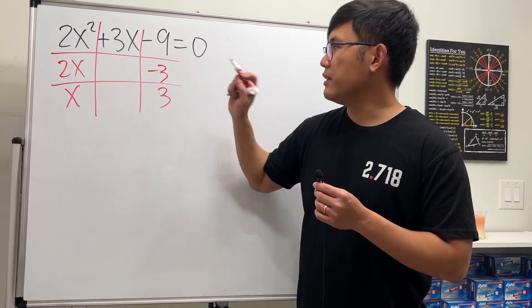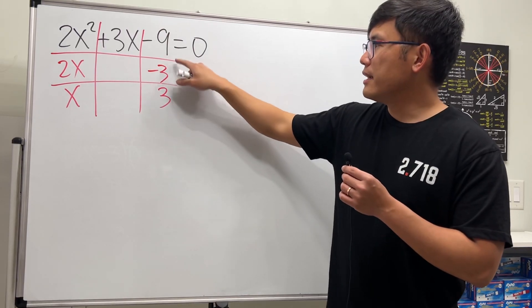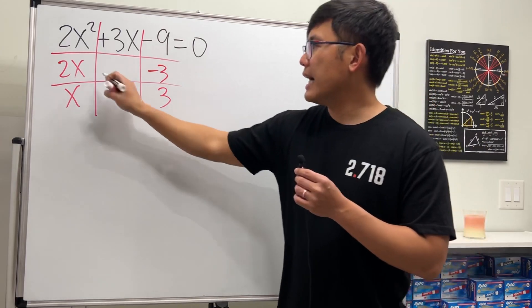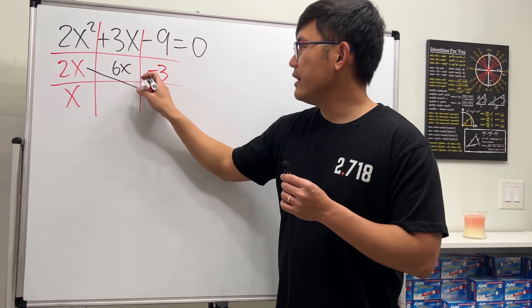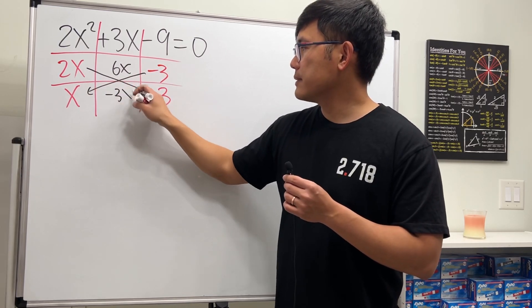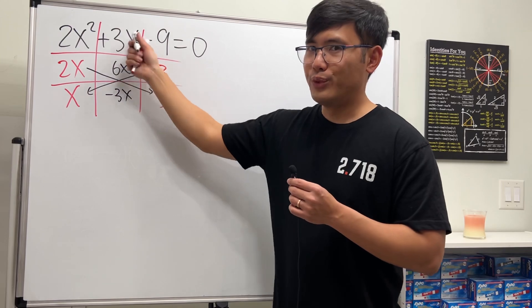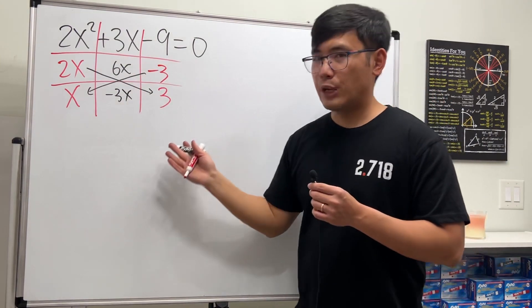We need a positive 3x here, and this is going to be multiplied with that, so I need a negative here. 3 times negative 3 is negative 9. We see that 2x times 3 is 6x, and then negative 3 times x is negative 3x. Together we do get 3x, so that's the correct combination.